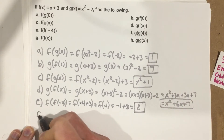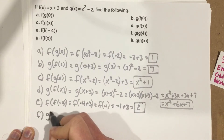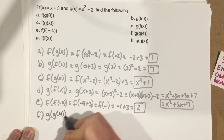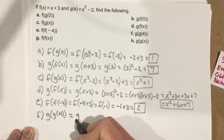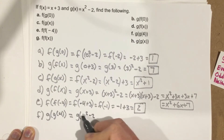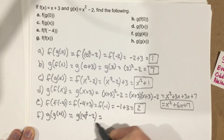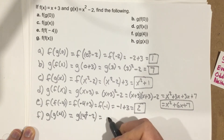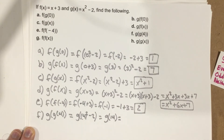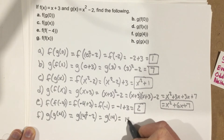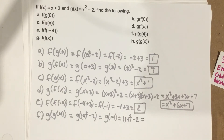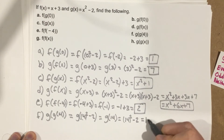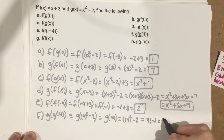Part f: g of g of 4. I take 4 and plug it into g: 4 squared minus 2 is 16 minus 2, which is 14. So I have g of 14. Plugging 14 into g: 14 squared minus 2. 14 squared is 196, so 196 minus 2 equals 194.